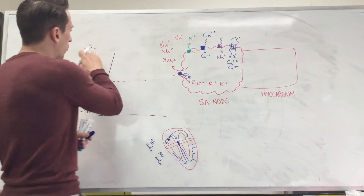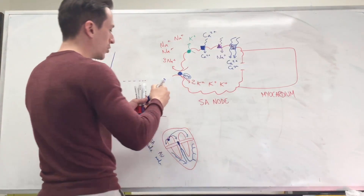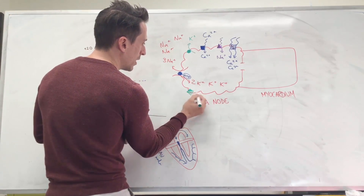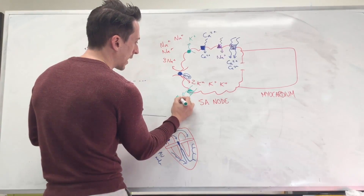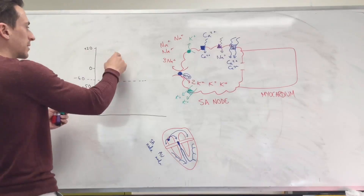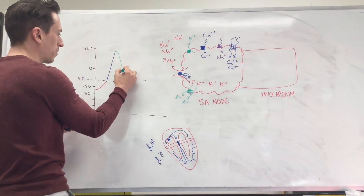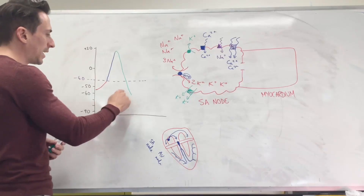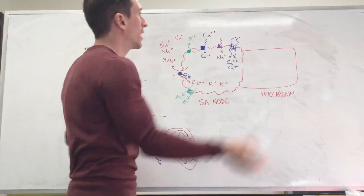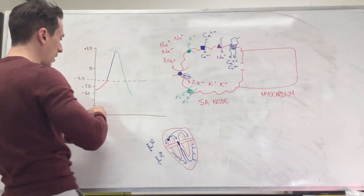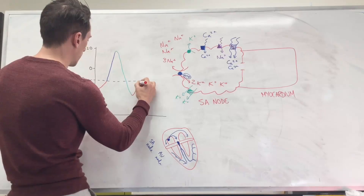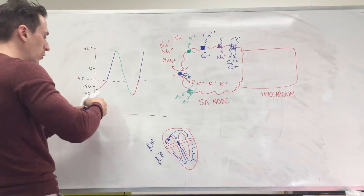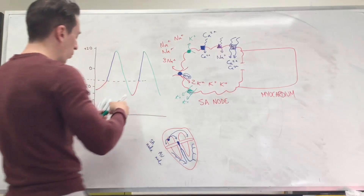Now, when it hits around about positive 20, more potassium channels open up. Remember, before these were just leaky potassium channels — now we've got very specific potassium channels opening up, and heaps of potassium start to leak out of the cell. If heaps of potassium leak out of the cell at positive 20, the positive charge is going back out again, and it drops back down to around about negative 55 to negative 60. Now, if it's dropping back down to here, what happens again? The whole thing occurs — leaky calcium, leaky sodium — and then it goes back up to negative 40, which then opens the calcium channels, and that sends the signal back up, which closes those channels but opens the potassium channels, and it drops back down.